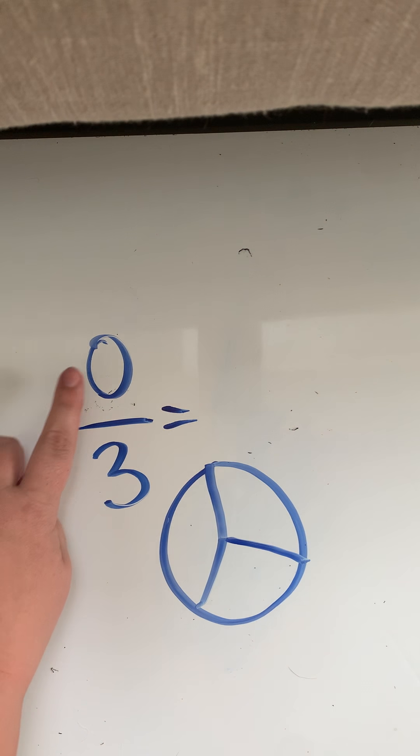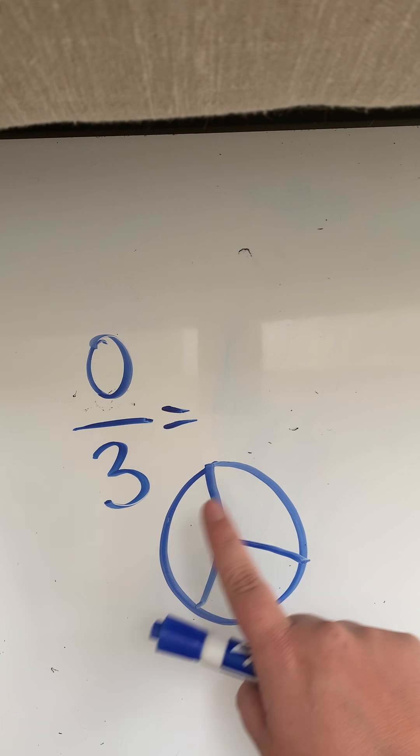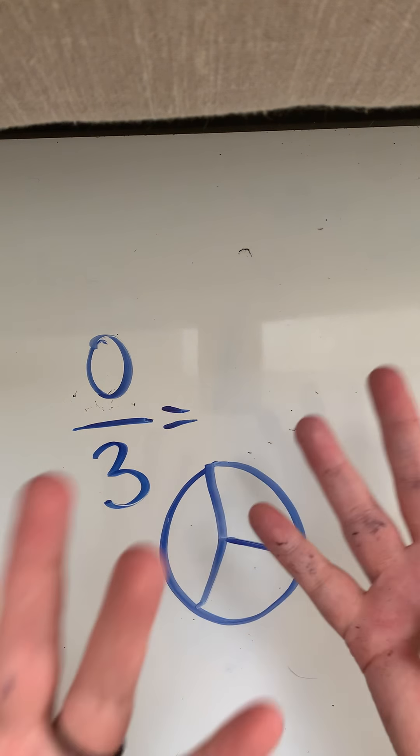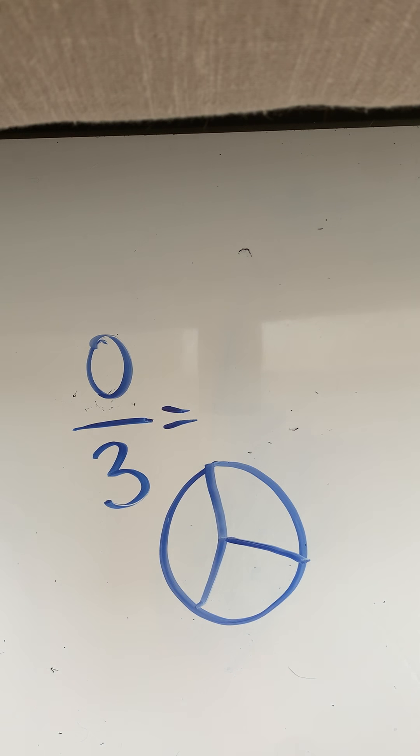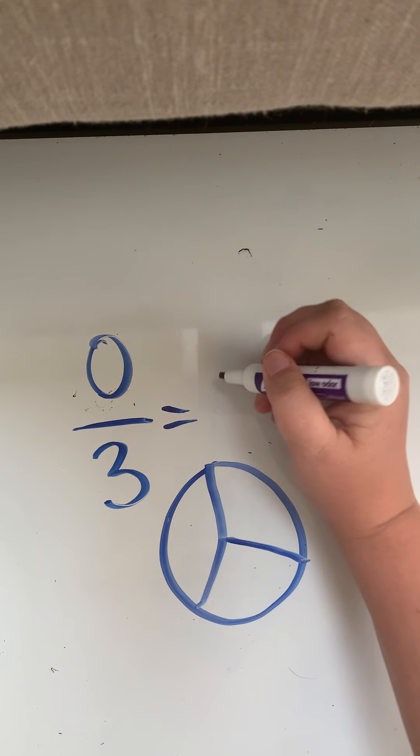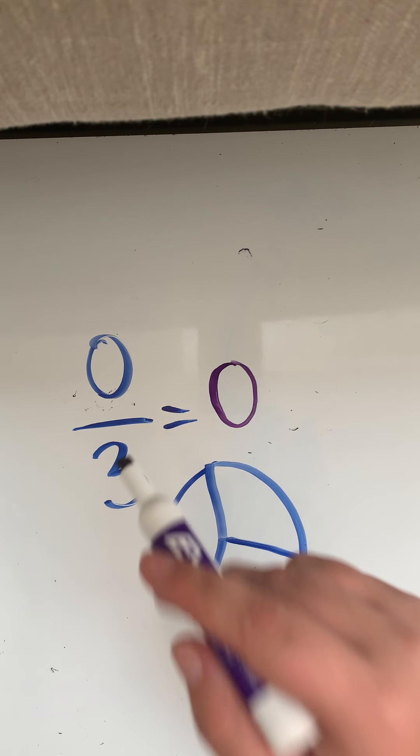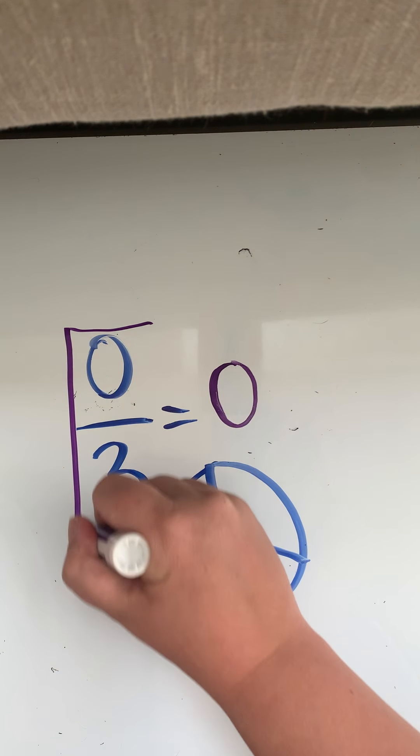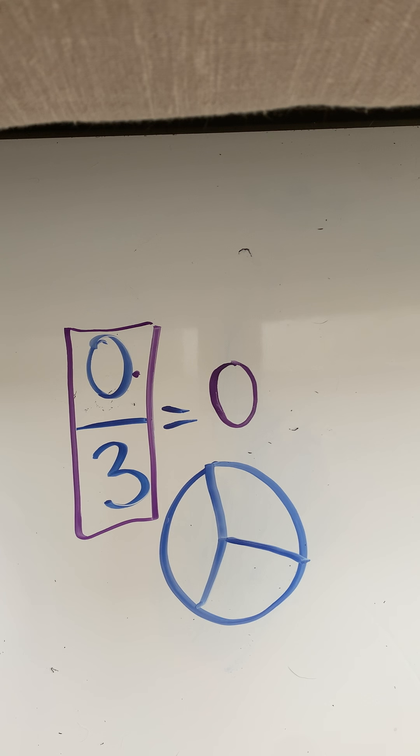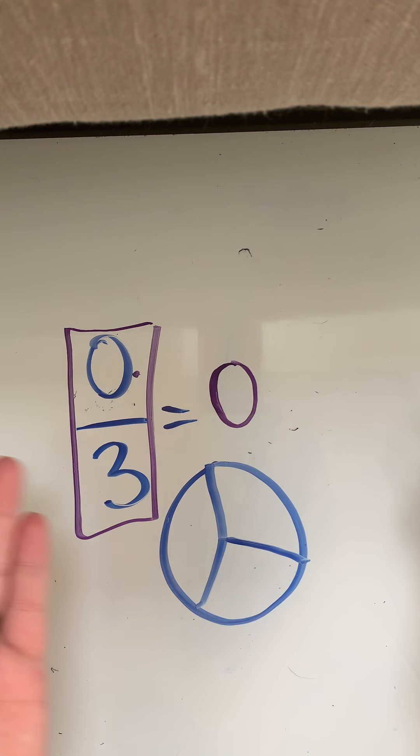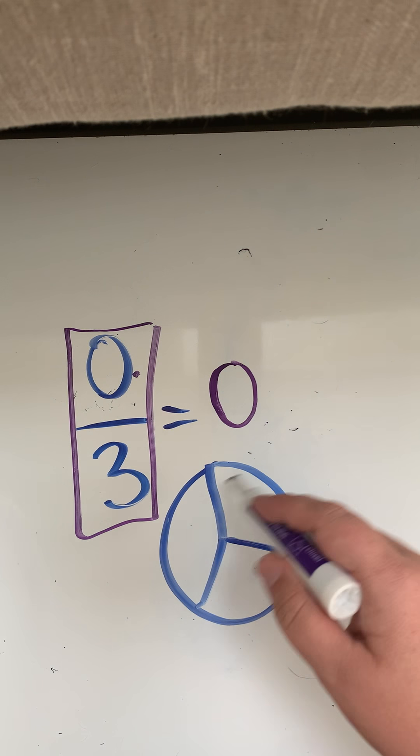Now, what if my fraction is like this? Zero over three. Well, let me draw my cookie again. And I'm going to divide it into my three equal parts because that's what my denominator tells me to do. Now, what does my numerator say? Do I need to shade anything in? No. So that means that how many in this pie do I have shaded? None. Exactly. So my answer would be zero. I have zero parts of this cookie shaded. If I see a fraction and I have a zero in the numerator, that's basically just saying that you have zero parts shaded.